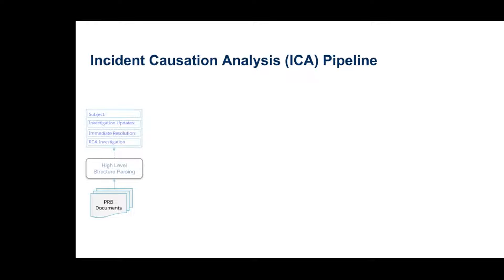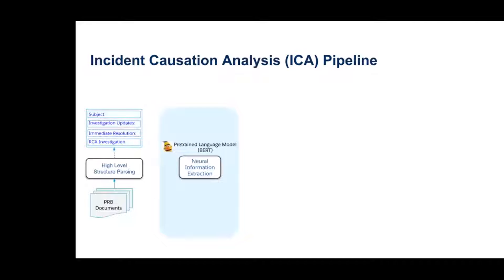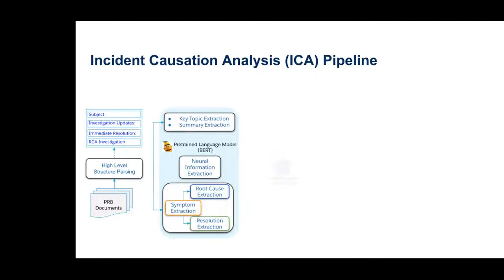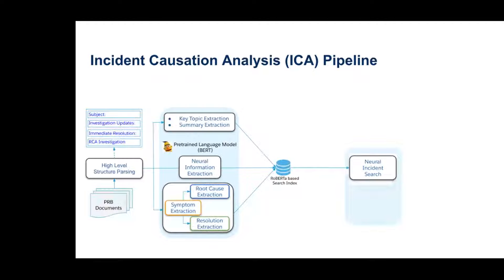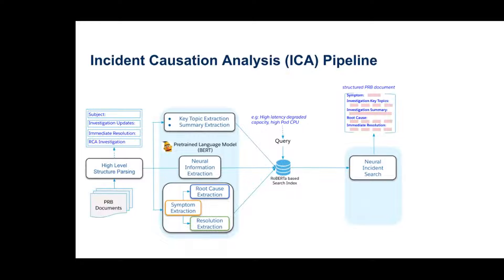The ICA pipeline starts with unstructured PRB documents and performs high-level structure parsing, yielding the subject, investigation details, and RCA details such as the immediate resolution and root cause. A neural information extraction module based on pre-trained language models like BERT performs key topic extraction, summary extraction, and symptom, root cause, and resolution extraction. All extracted information along with the original document is put into a neural search index based on RoBERTa-based embeddings, enabling neural incident search. Given a query like 'high latency, high pod CPU,' the system returns structured PRB documents with extracted symptoms, key topic summaries, root causes, and resolutions.